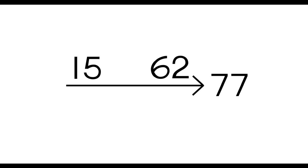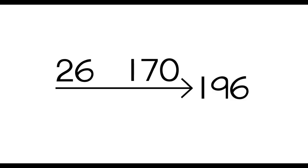Get ready for your next one. Here we have 26 and 170 are our small numbers. Our big number is 196. Say the plus problems with me: 26 plus 170 equals 196. 170 plus 26 equals 196. Say the minus: 196 minus 170 equals 26. The other one, 196 minus 26 equals 170.